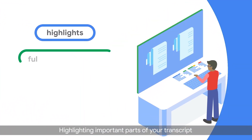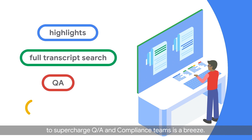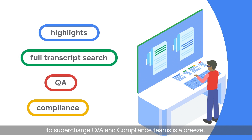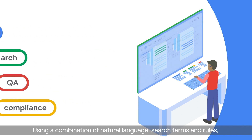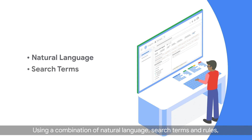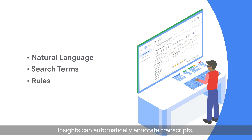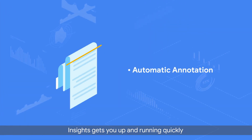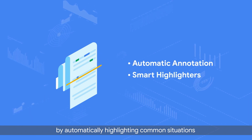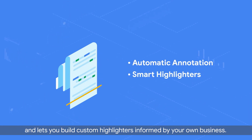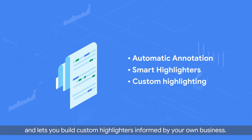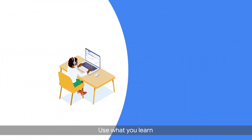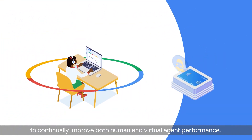Highlighting important parts of your transcript to supercharge QA and compliance teams is a breeze. Using a combination of natural language, search terms, and rules, Insights can automatically annotate transcripts. Insights gets you up and running quickly by automatically highlighting common situations and lets you build custom highlighters informed by your own business. Use what you learn to continually improve both human and virtual agent performance.